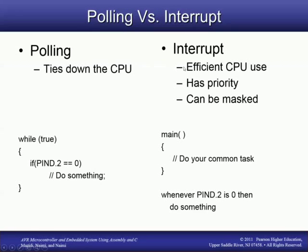We have polling versus interrupt. Here's our infinite loop in the program inside of main. With polling, we would check this pin — we're going to check pin 2 of port D and see if it's low. And if it is, then we're going to do something. That's called polling, where inside of our main program, we check the state of that pin.